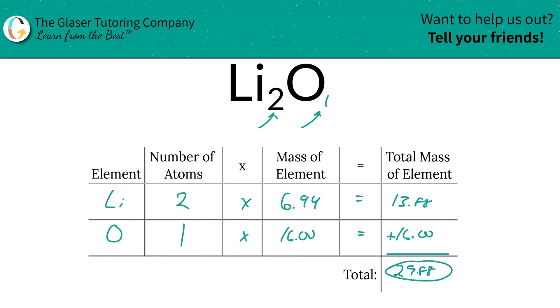And there it is—that's the total mass of the compound. Now that we found the total mass of the compound, what we're going to do is add a column to the table to help us find the percent. Easy as pie, watch.